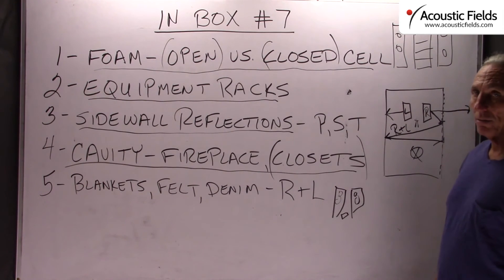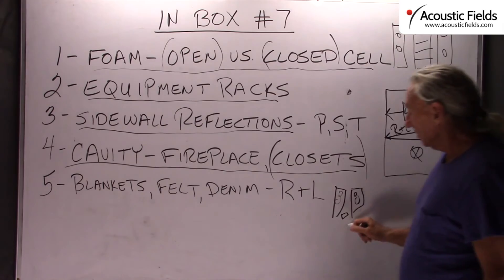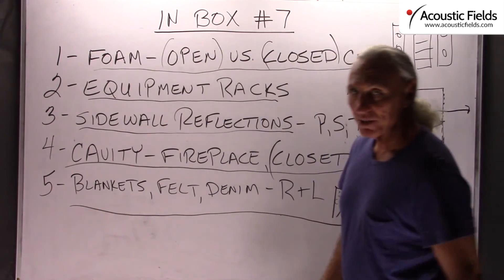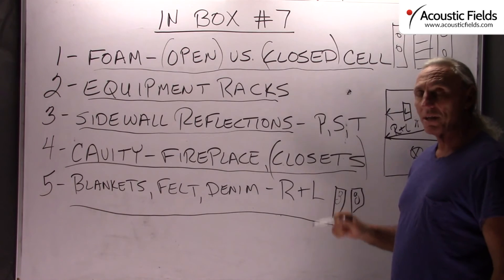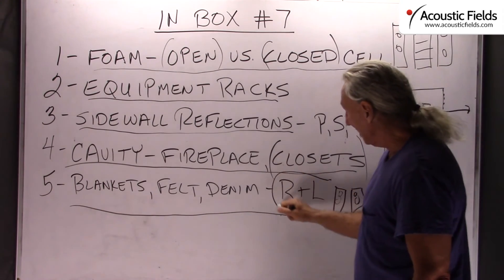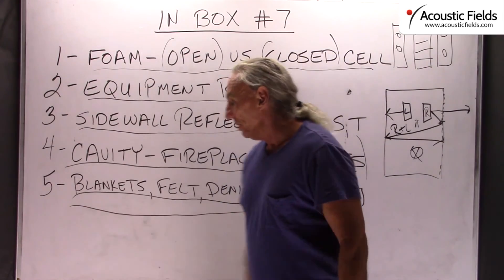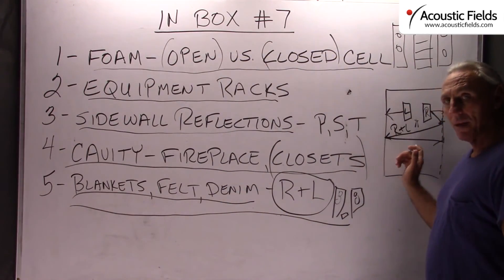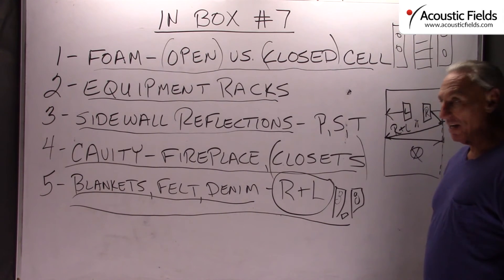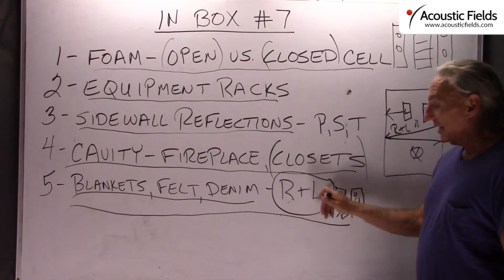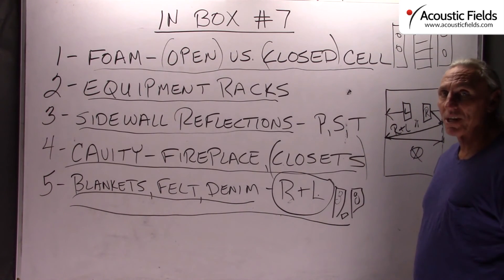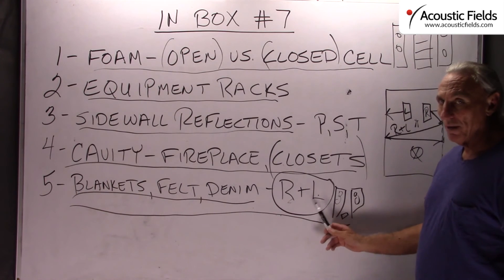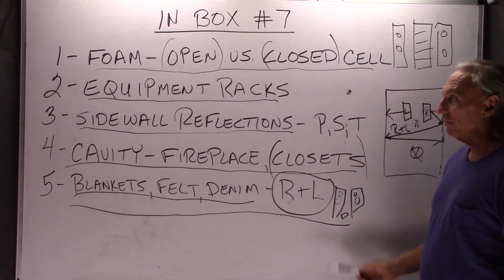Blankets, felts, denims, cottons — I get a lot of questions on which is best to use for absorption. Well, I need to know your usage and what you're doing in the room. More importantly, I need to know the rate and level of absorption of these products so we can put that calculation into the room and get you the predictability and consistency you need. I'm not against using these products, but you've got to give me rate and level to work with. Most of these products don't have that data because they're not acoustical products — they're more like building insulation, not designed for that purpose. Rate and level are critical, and keeping them consistent in every room is critical.